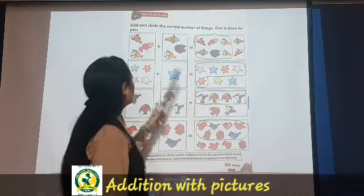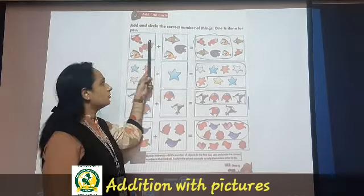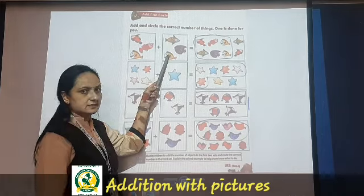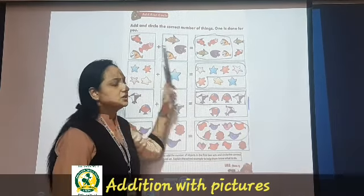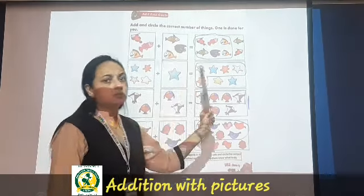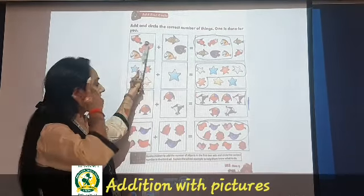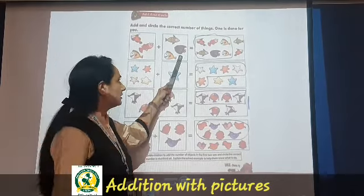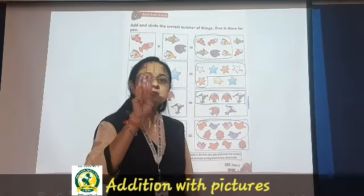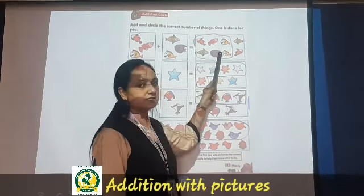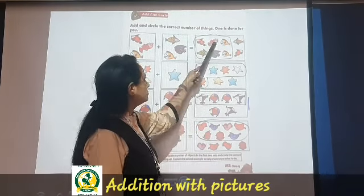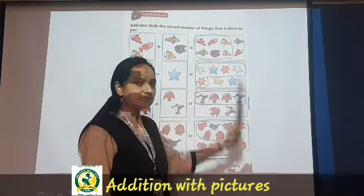3 plus 3. Let us see: we count all together — 1, 2, 3, 4, 5, 6. So 6 fish. You can count with fingers also: 3 fish plus 3 fish. Keep 3 in your mind and count 3 on your fingers: 4, 5, 6. So here will be 6 fish. Circle 6: 1, 2, 3, 4, 5, 6. Done.